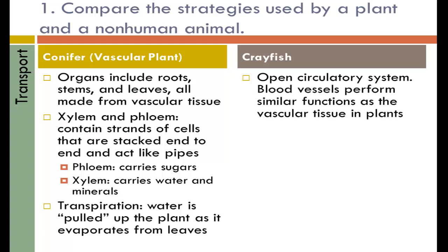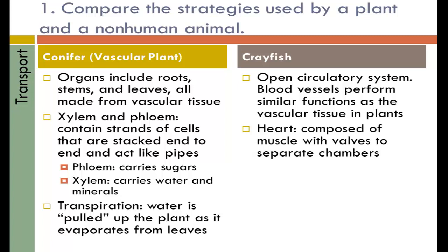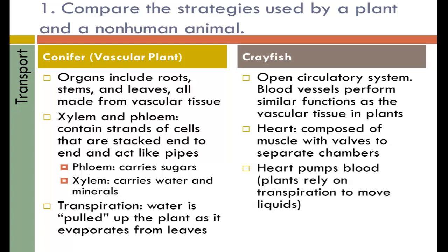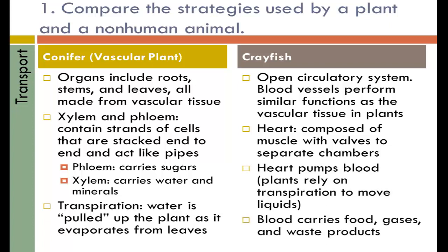Crayfish have open circulatory systems, so the blood vessels are performing similar functions to the vascular tissues in plants. The crayfish has a heart composed of muscle with valves that separate chambers. This prevents the mixing of oxygen-rich and oxygen-poor blood and makes the circulatory system more efficient. The heart pumps blood, whereas plants rely on transpiration to move liquids. The blood carries food, gases, and waste products to the tissues of the crayfish.